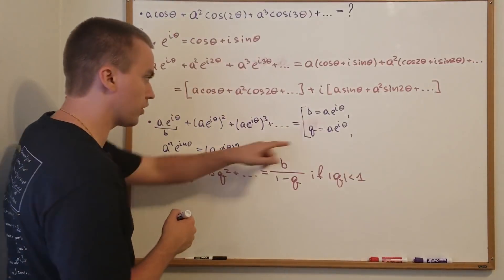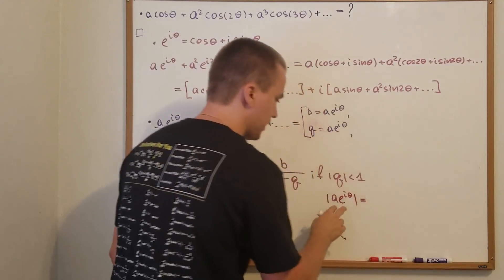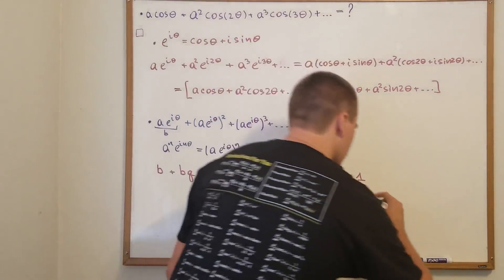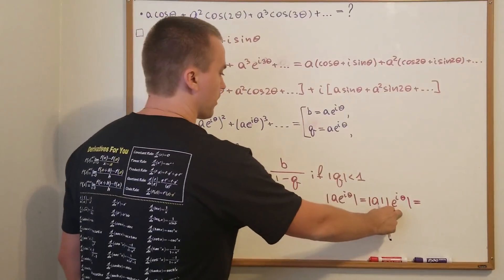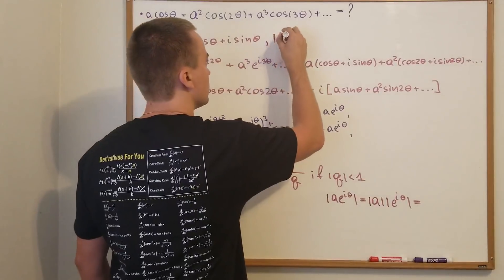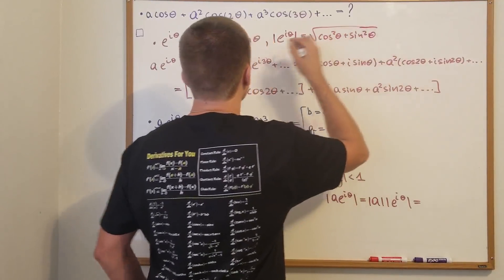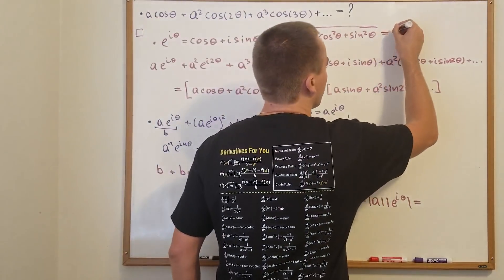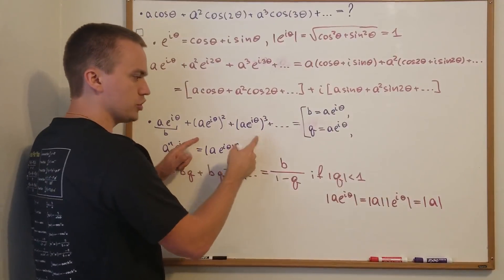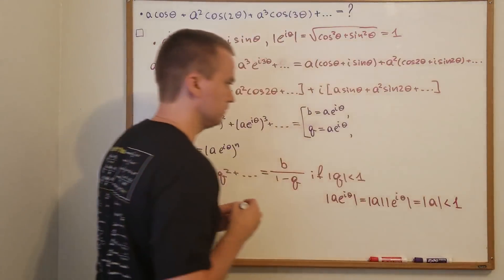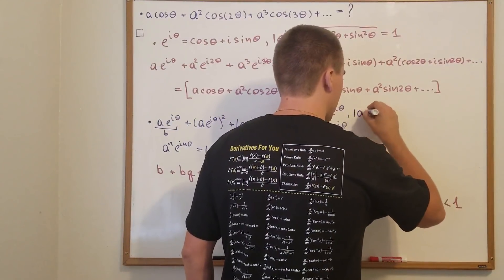Our Q is A·e^(iθ), so |Q| = |A|·|e^(iθ)|. Since |e^(iθ)| equals the square root of cos²θ + sin²θ, which equals one, we have |Q| = |A|. So this series converges if the absolute value of A is less than one.